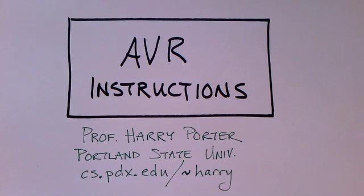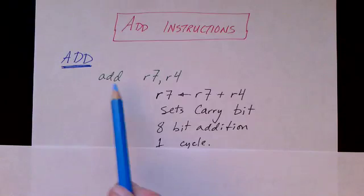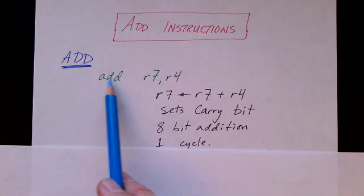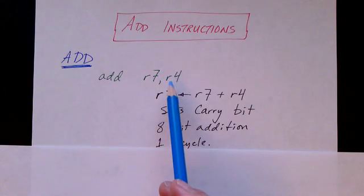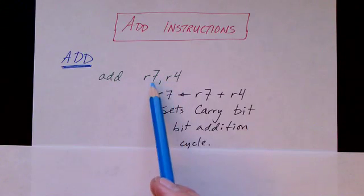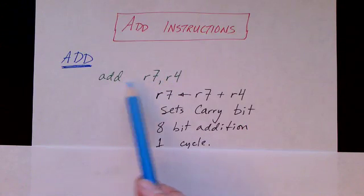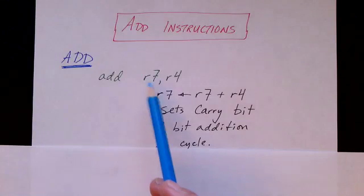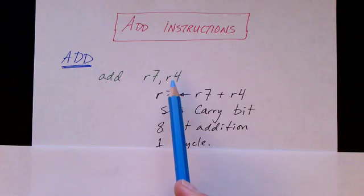In this video we'll take a look at the instruction set for the AVR microprocessors. Let's begin with the ADD instruction. Here's an example of the assembly code version: we're adding the contents of register 7 with register 4 and putting the result in register 7. This is encoded into 16 bits and stored in flash memory, but let's just look at the assembly code version for now.